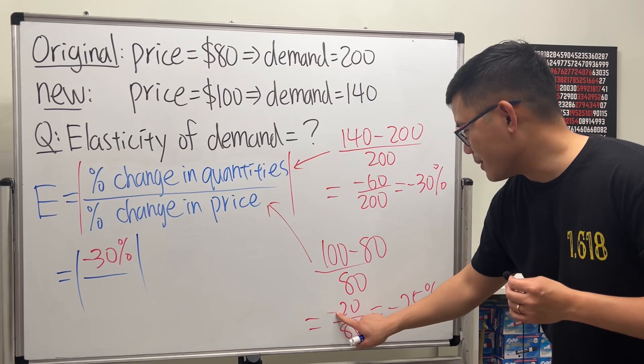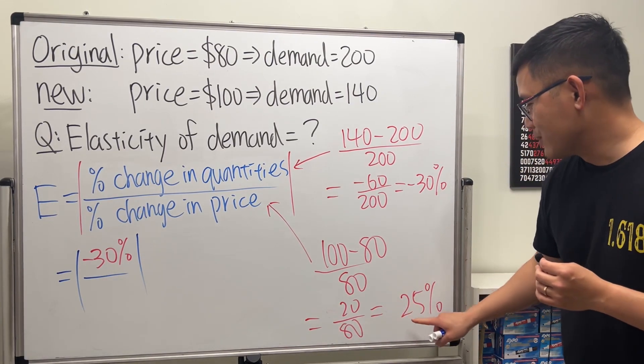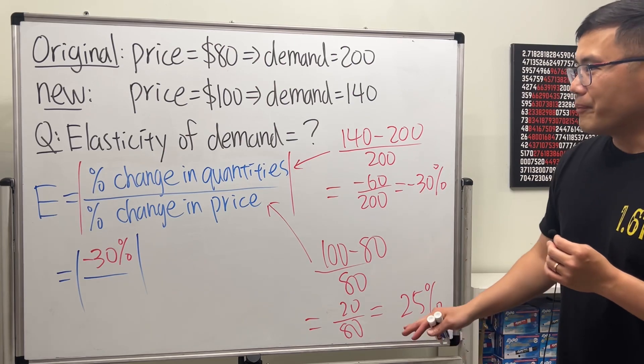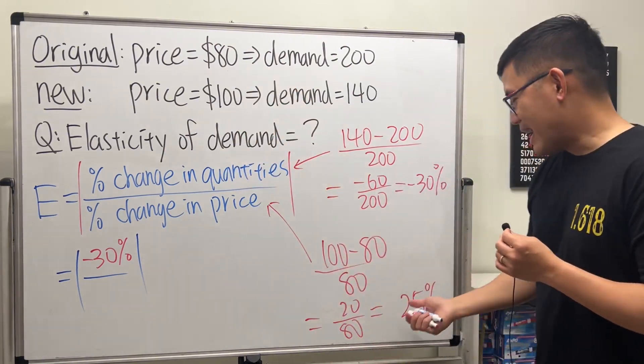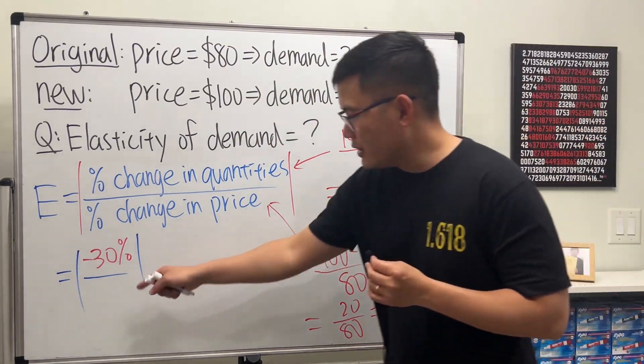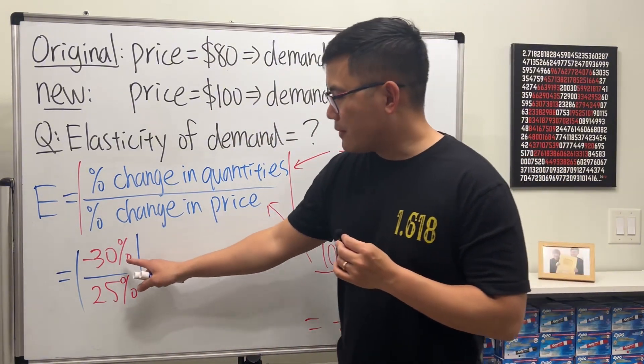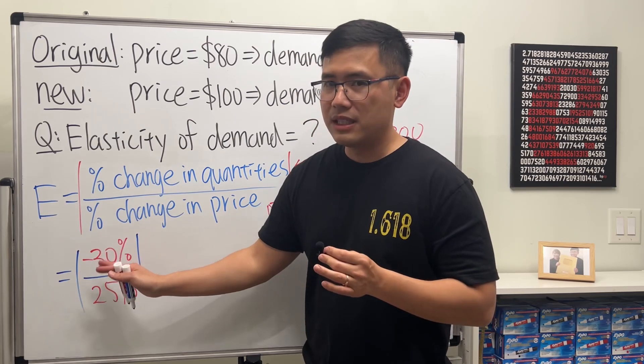That's positive 20 over 80 and that's going to be positive 25%. So we increase the price by 25%. You put it down right here, 25%.